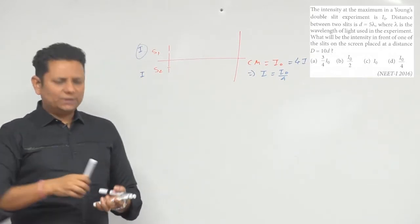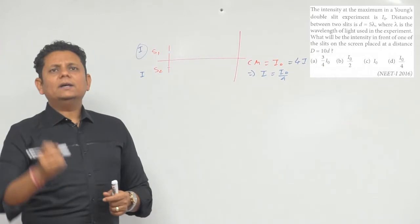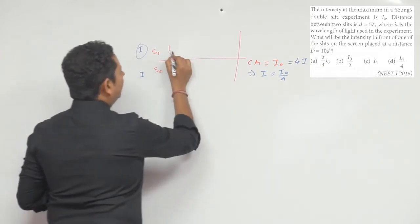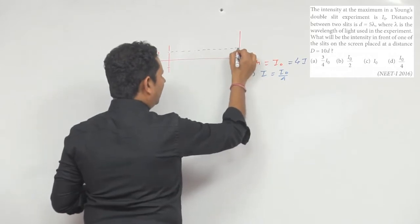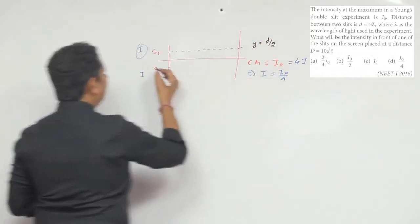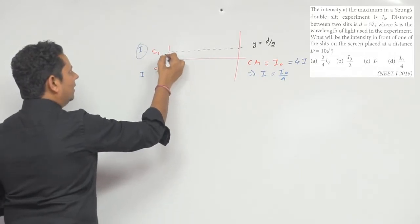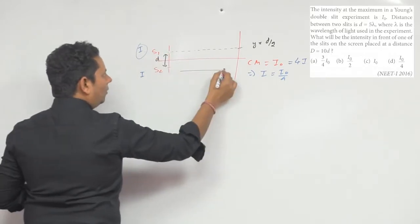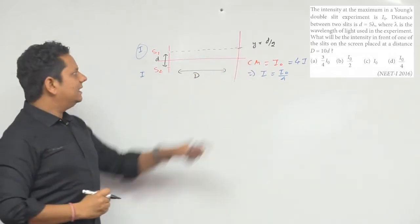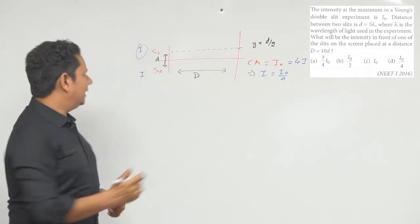अब इस सवाल में हमसे पूछा है कि हमें बताना है उस location पे intensity की value क्या होएगी जो इस slit के बिलकुल सामने है — यहाँ पर यह आपकी location है। इस location को आप Y = D/2 कह सकते हैं।